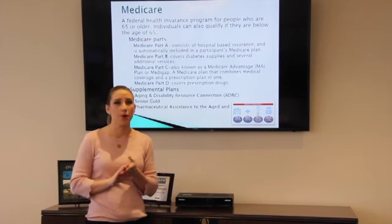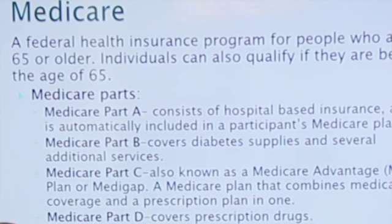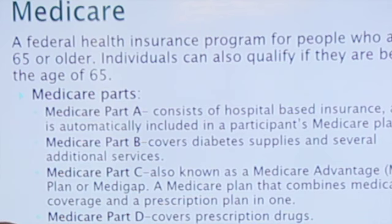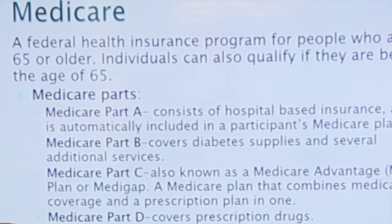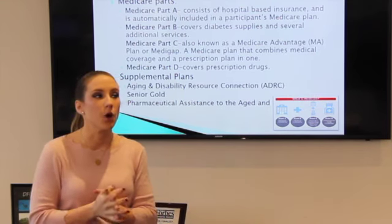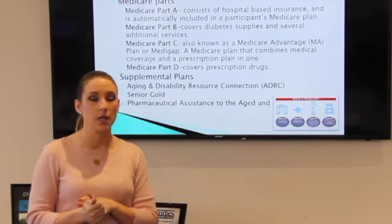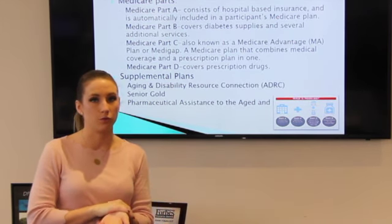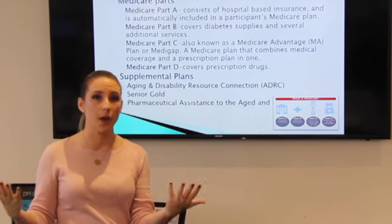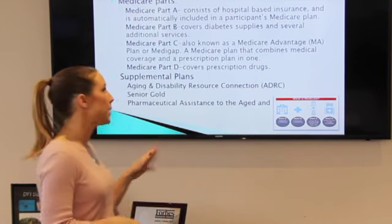Part A and B people are automatically enrolled in when they turn the age of 65. Part C and D people have to actively enroll in once they turn 65, because they don't automatically get it. Part A is going to cover hospital and doctor's office visits. Part B covers your durable medical equipment — for diabetics that includes test strips, lancets, and the meter. All of that is covered by Part B.